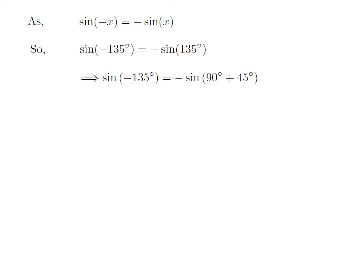As 135 degrees is equal to 90 degrees plus 45 degrees, sine of minus 135 degrees is equal to minus sine of 90 degrees plus 45 degrees.